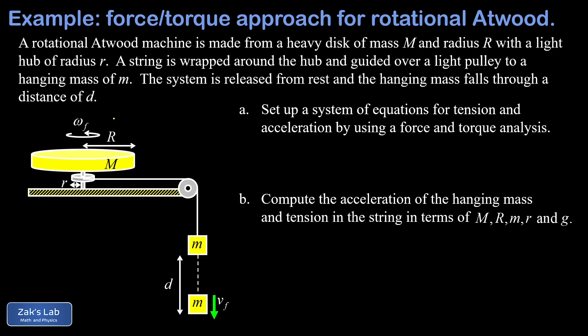The last part of the problem asks us to find the final angular velocity of the disc after the hanging mass has dropped through a distance D. We've solved that before using the energy approach — I'll post a link to that at the top. What's different here is we're going to use forces and torques. This gives us more than just part C; in part B we'll also find the acceleration of the hanging mass and the tension in the string, which the energy approach cannot do.